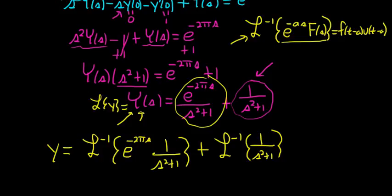So a here is going to be 2π. That's our a right here. Just matching stuff with the formula. Big F of s is 1 over s squared plus 1. So the inverse Laplace of this is sine t. That's sine t.